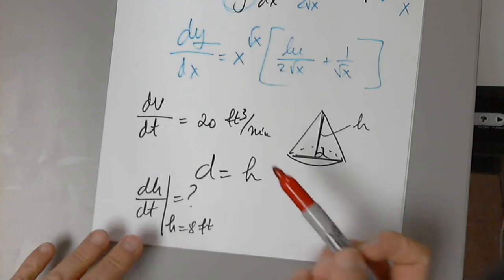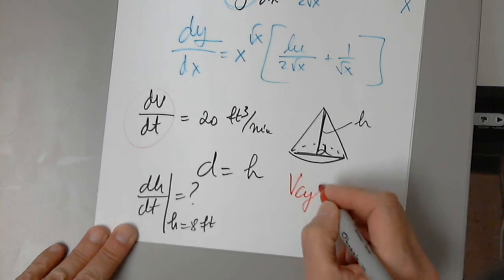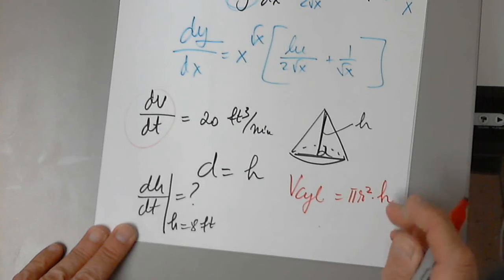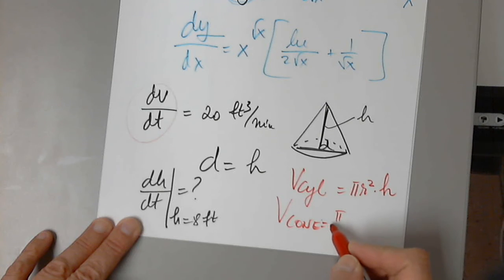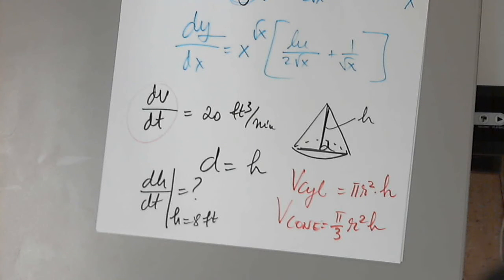I have to start with the volume of the cone. The volume of the cylinder is area of the base times the height. The volume of a cone is the same, but divided by 3. The volume of the cylinder is the area of the base, which is a circle, π r squared times the height. And the volume of a cone is exactly the same, but divided by 3.